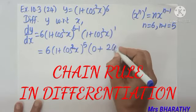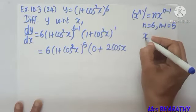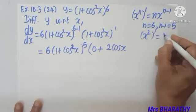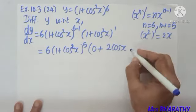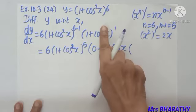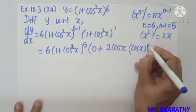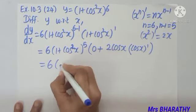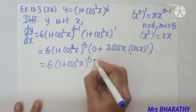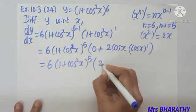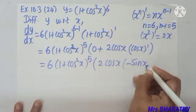cos²x will become 2·cos x, applying the same formula — just as x² derivative is 2x, cos²x becomes 2·cos x. Then hide the power and differentiate cos x. My answer so far: 6 × (1 + cos²x)⁵ × 2·cos x, and the derivative of cos x is −sin x.